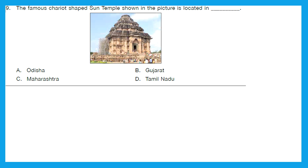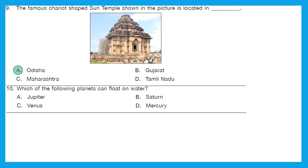Question 9: The famous chariot-shaped Sun Temple shown in the picture is located in — is it Odisha, Gujarat, Maharashtra, or Tamil Nadu? It is Odisha. Question 10: Which of the following planets can float on water? Now that is interesting — there is a planet which can float on water, and the right answer is...